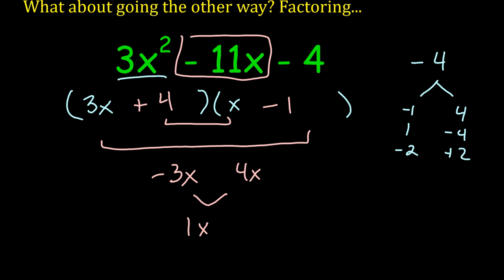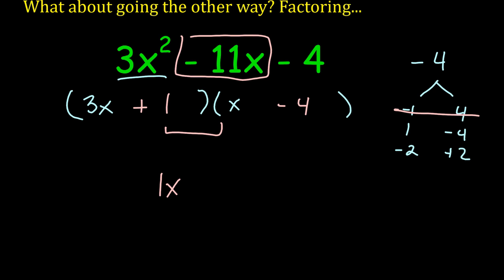Alright. So let's forget about that one. We can say we know the first one's wrong. Let's try the second one. We'll do plus 1 minus 4. We've got 1x. 3x times negative 4 is negative 12x. Combine those. 1x minus 12x is negative 11x. There we go. So on our third attempt, we found the factors.